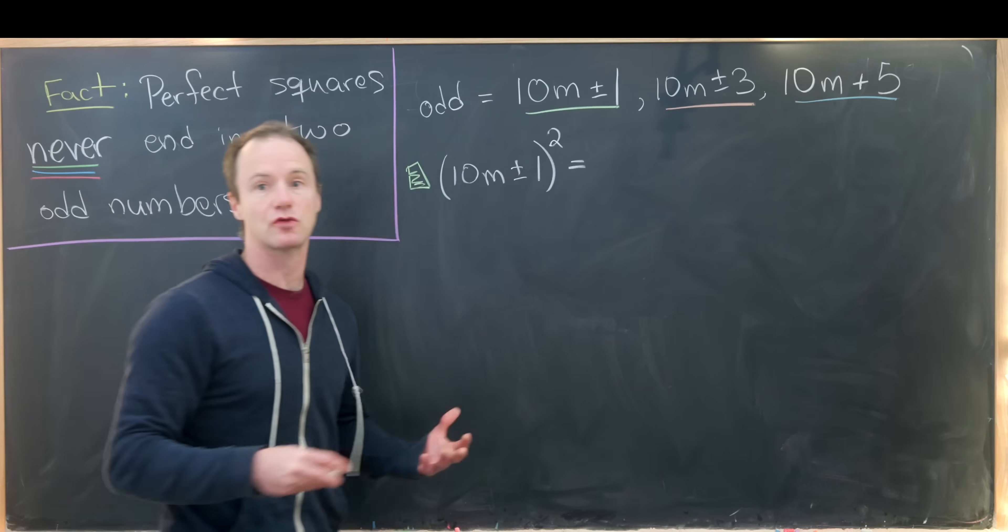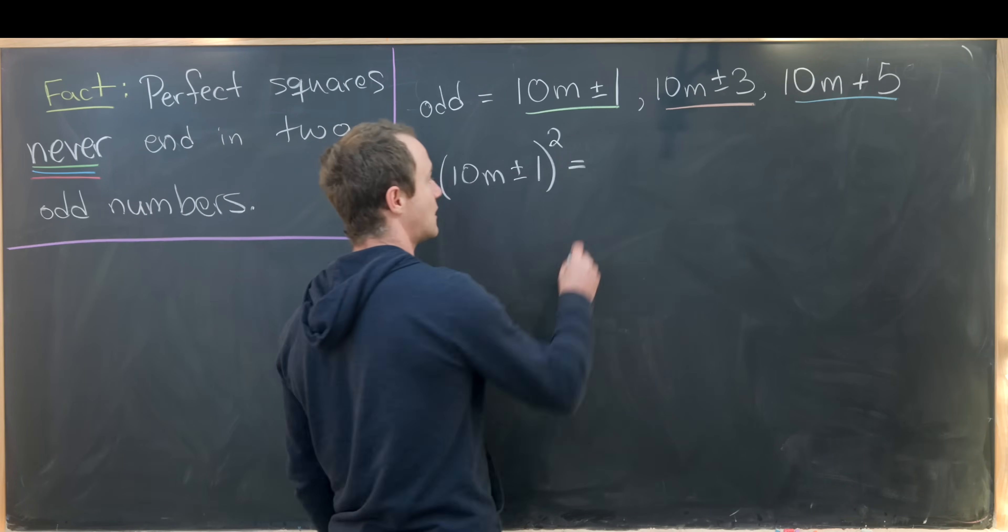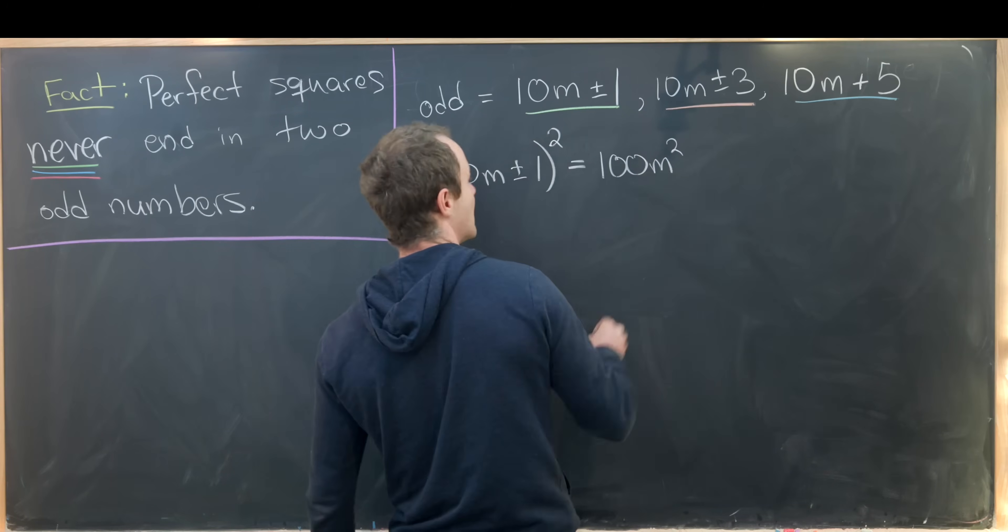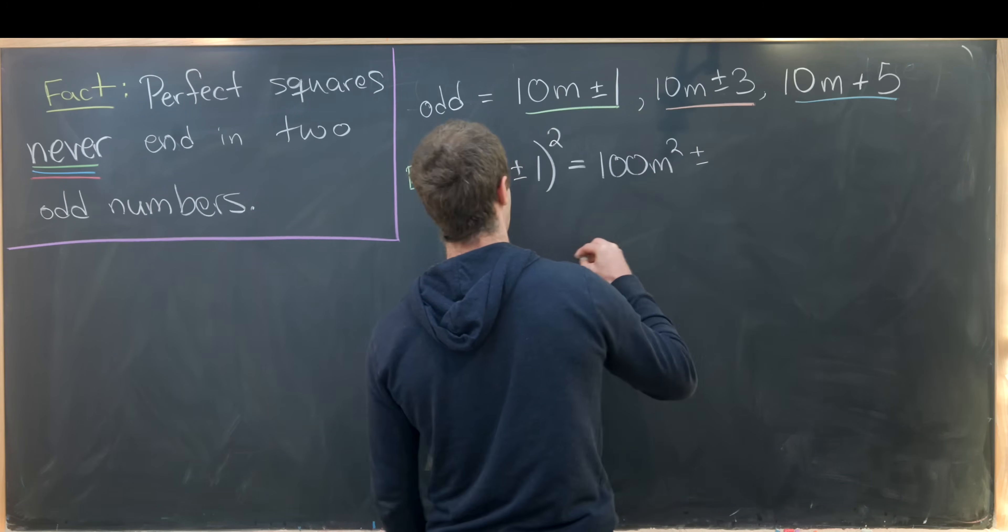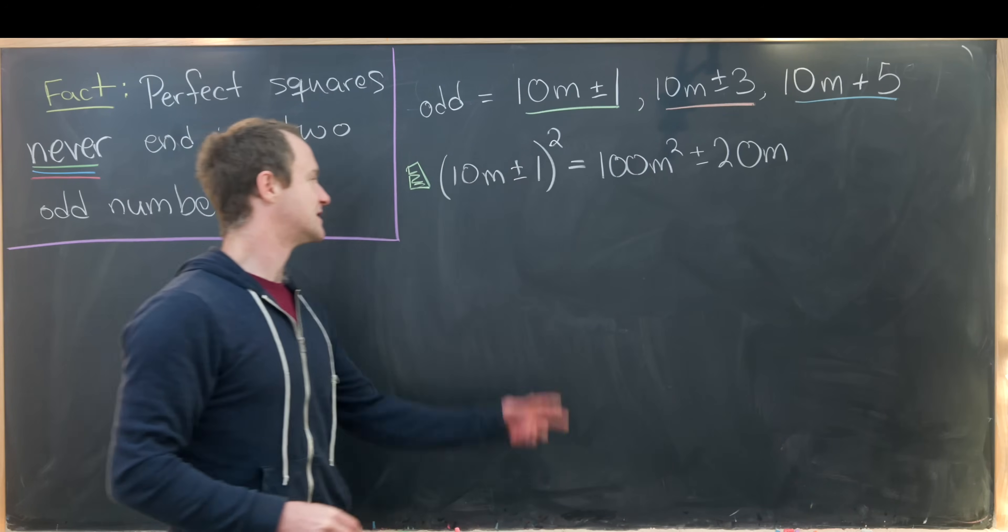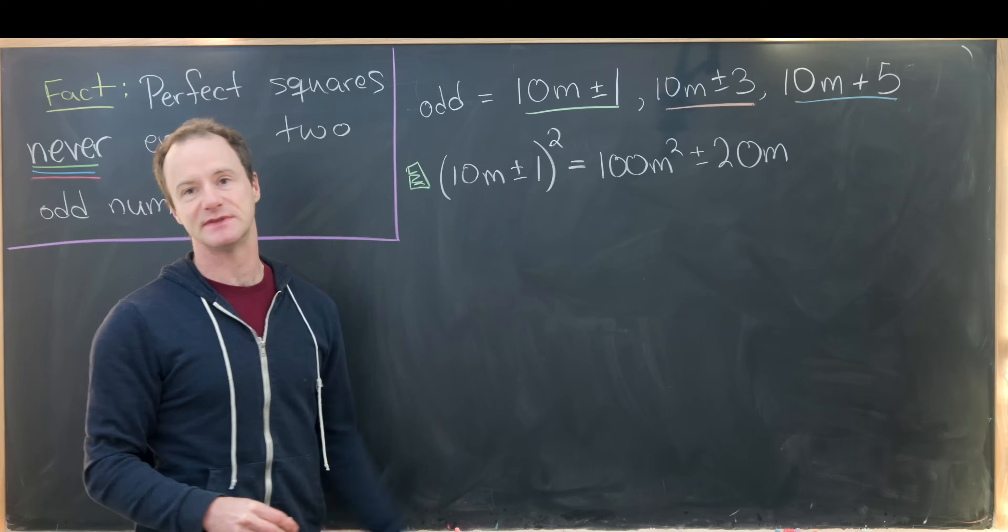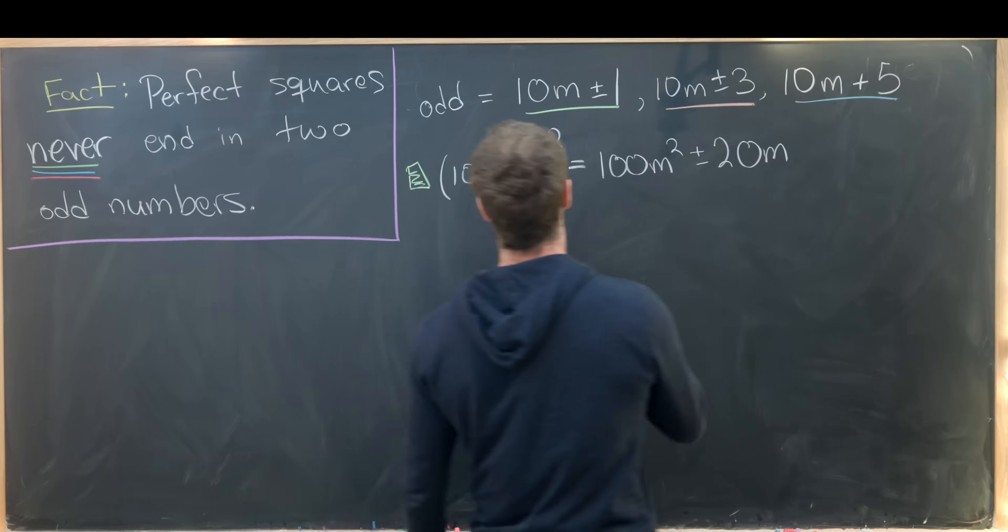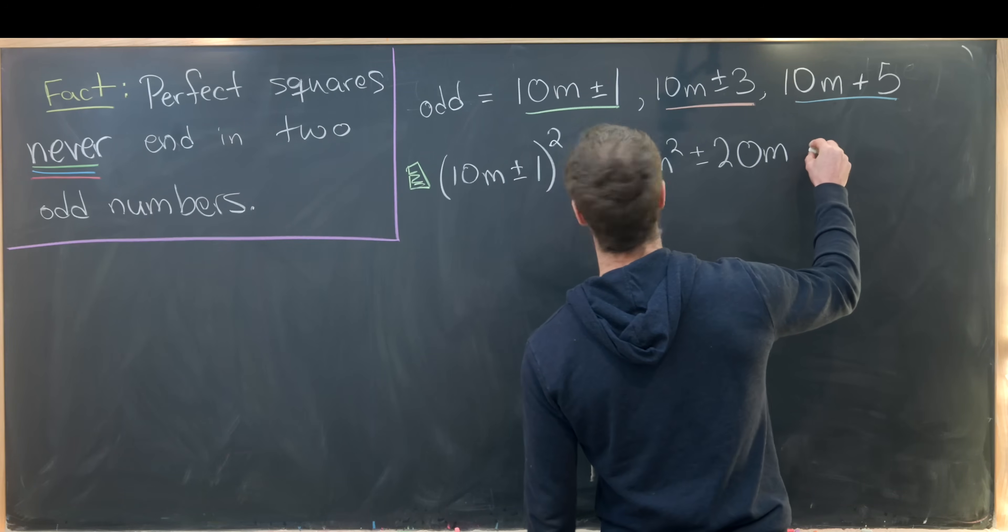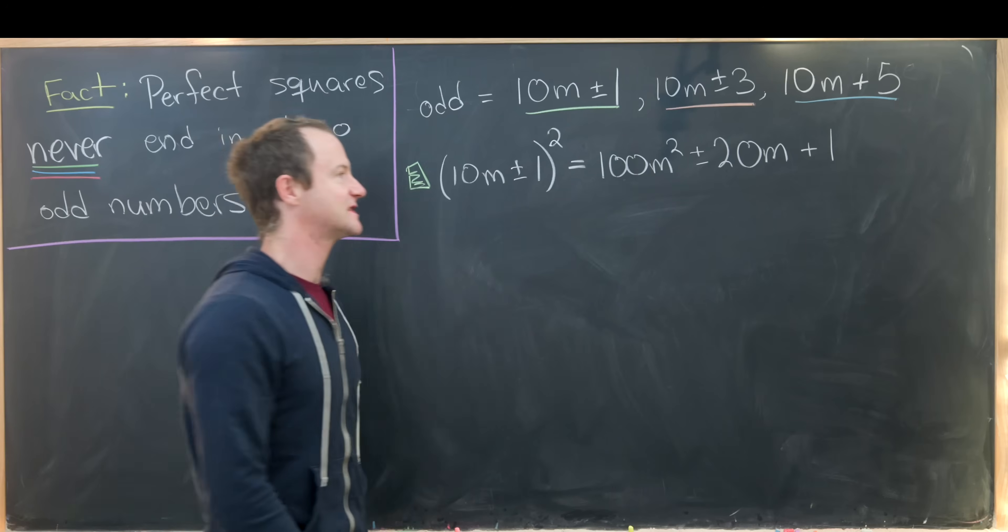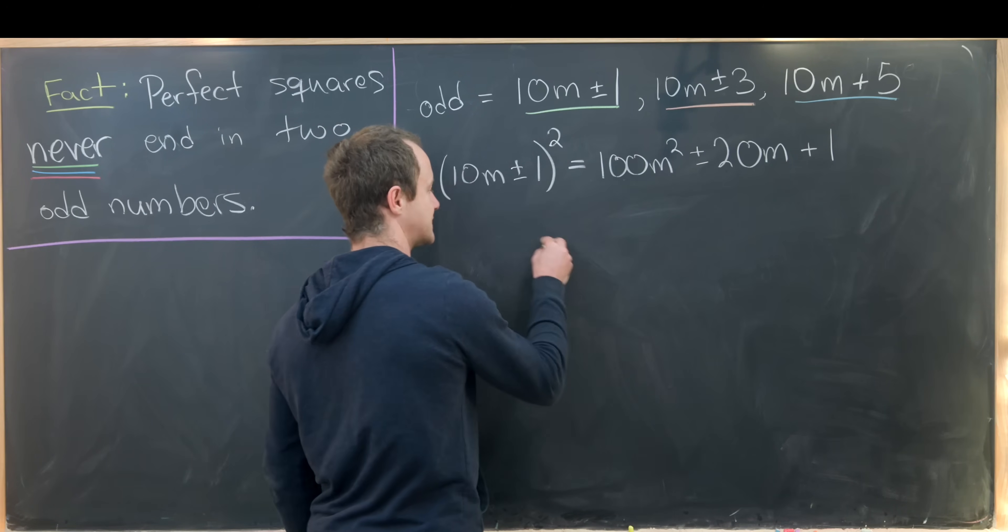So by standard rules for squaring a binomial, we'll have 100m squared, and then we'll have plus or minus 20 times m. And so that's because we've got 10m times negative one, but we have two copies of that after foiling it out. And then finally, we'll have a plus one. And now let's break this into two cases based on the plus or the minus.